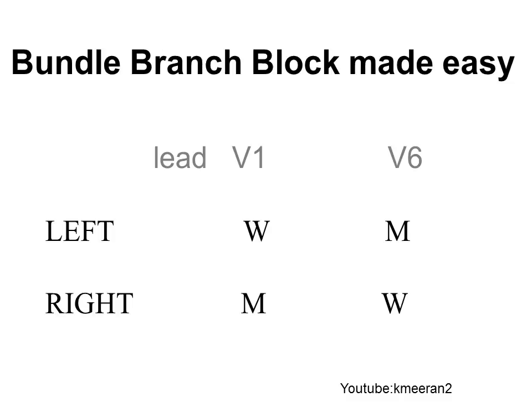To summarise: in left bundle branch block, lead V1 shows a W pattern (down, up, down, up, down) and lead V6 shows an M pattern (up, down, up, down). In right bundle branch block, lead V1 shows an M pattern (up, down, up, down) and lead V6 shows a W pattern (down, up, down, up).